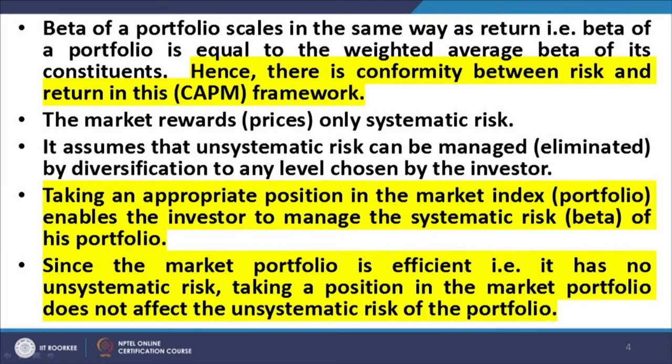The market rewards or prices only systematic risk. This is the fundamental outcome of the CAPM model: the market will give you expected returns provided you take systematic risk. If your portfolio is devoid of systematic risk and you have a huge amount of unsystematic risk, you will not get any market expected returns. The higher the systematic risk level of your portfolio, the higher are your expected returns — but please note the word 'expected returns'; it is not actual returns. Higher systematic risk means you are likely to get higher returns, but there is also a higher likelihood of those returns not materializing.